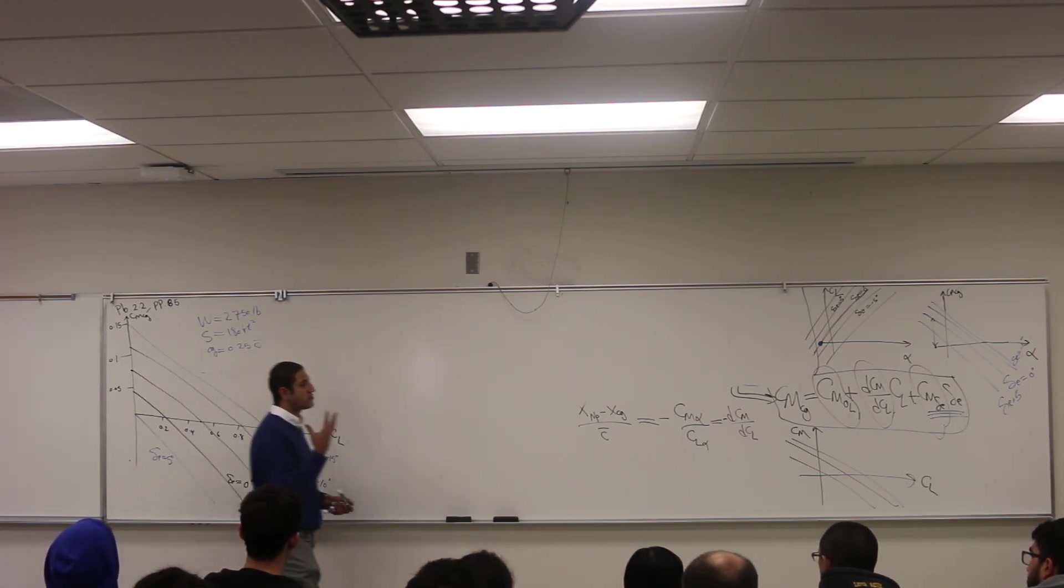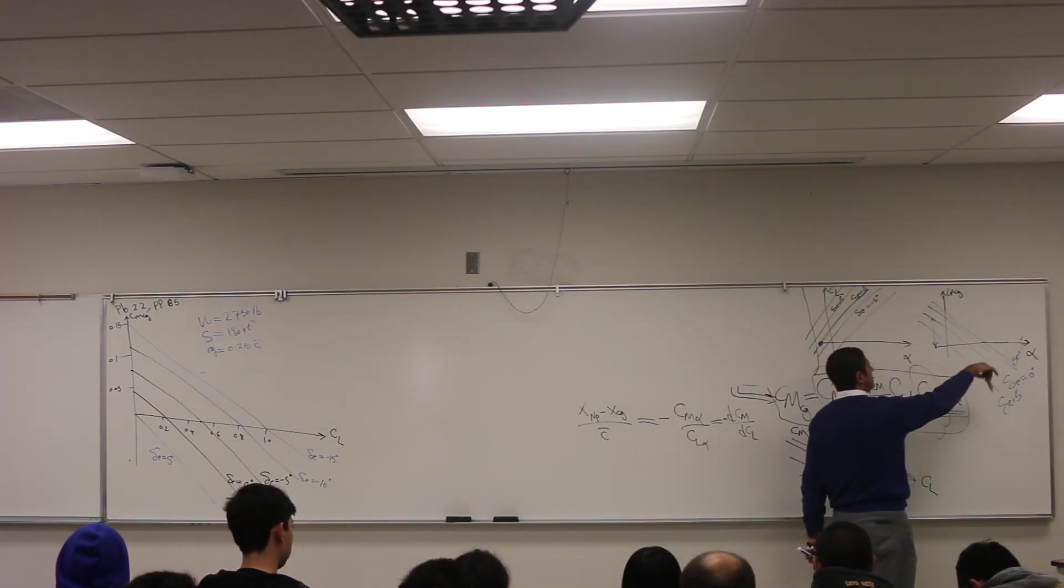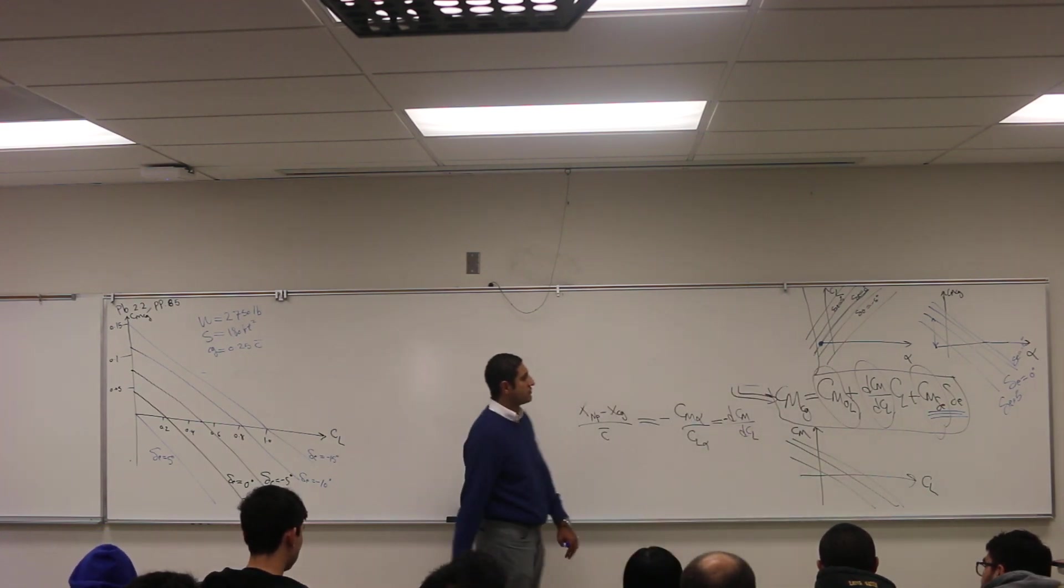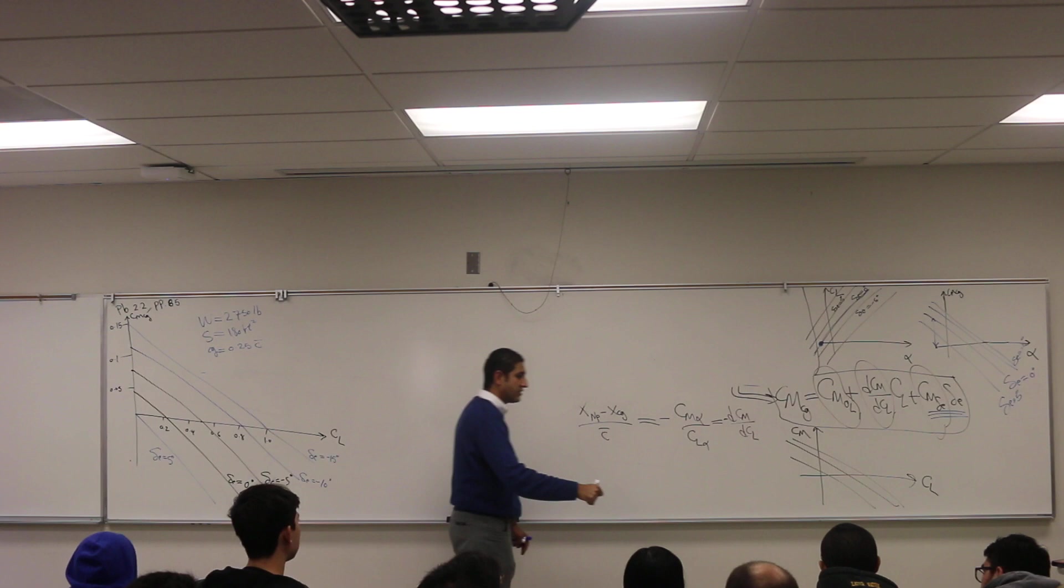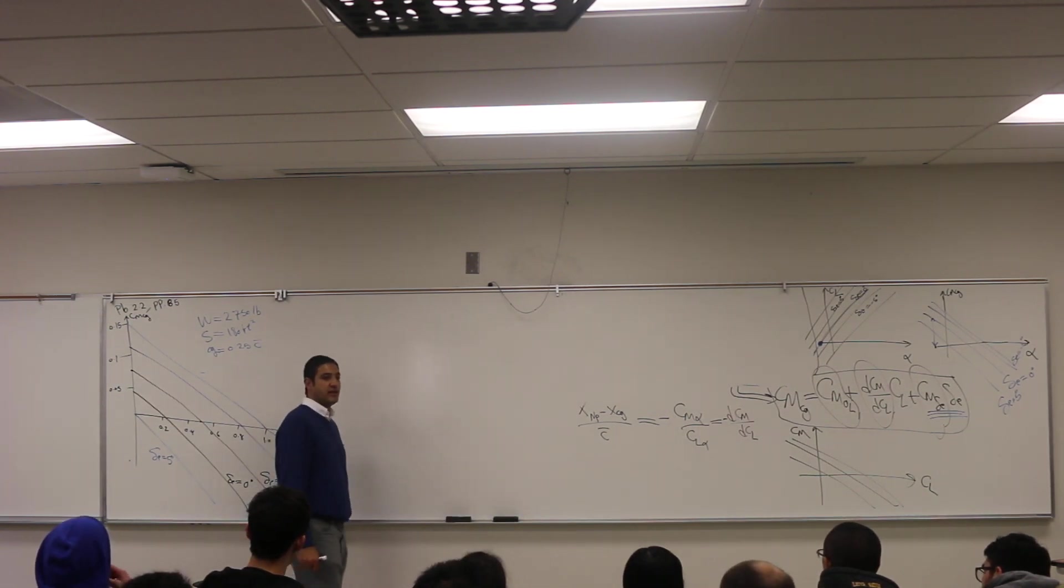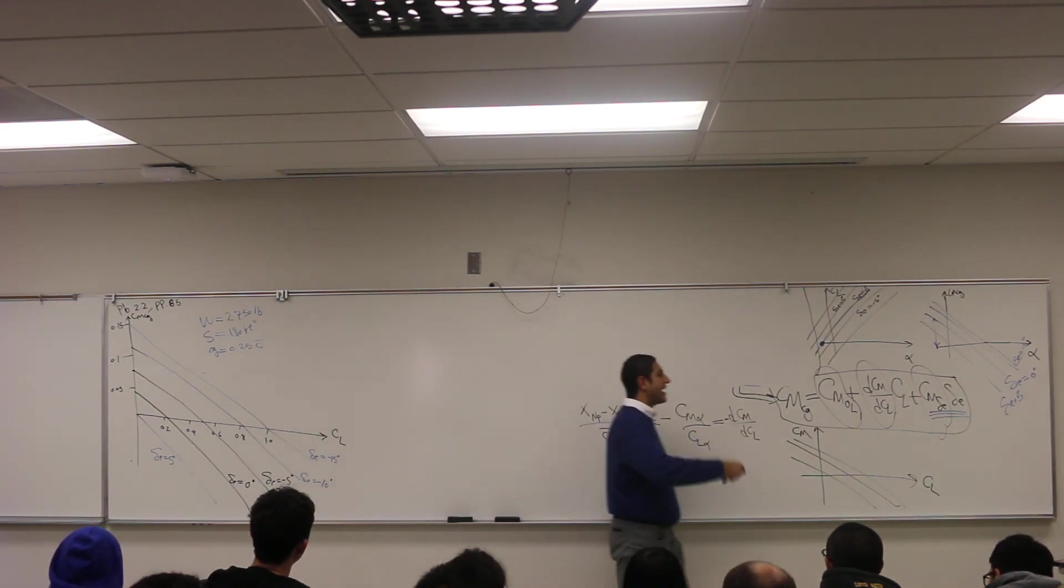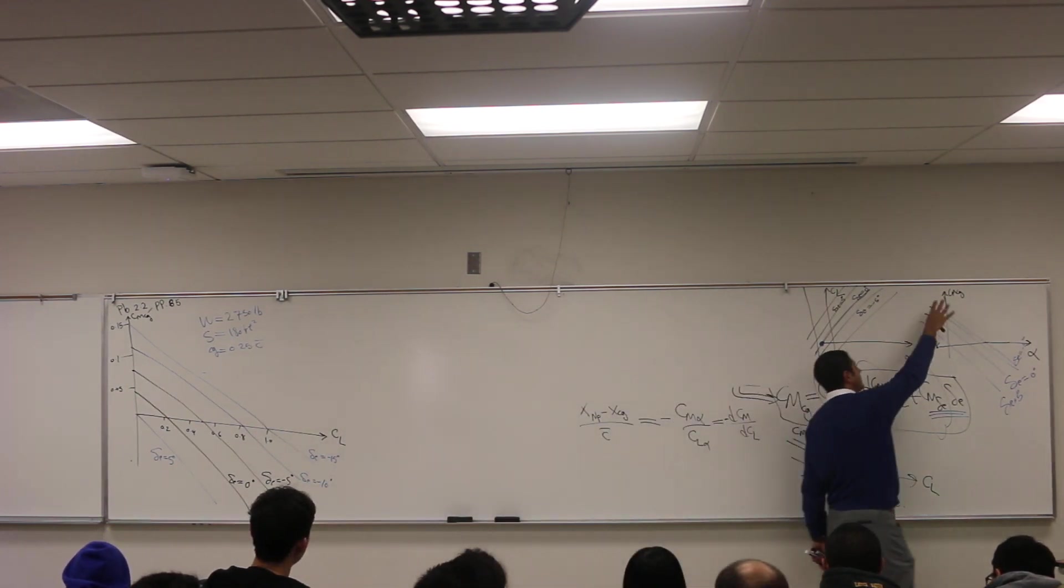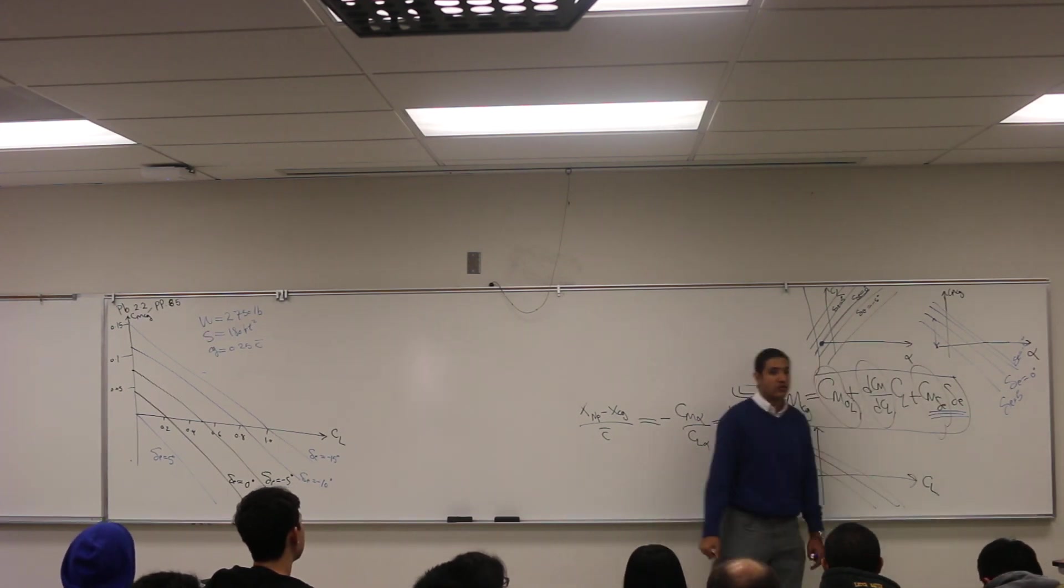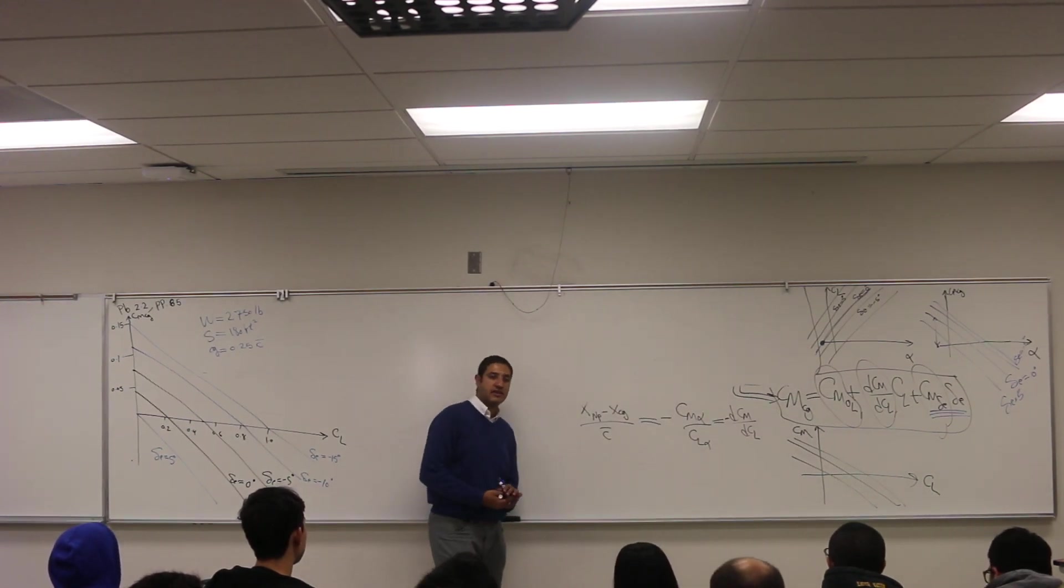Because I need the moment to change with angle of attack. This is the curve that I like to see. It's negative slope. The slope should not be zero. So if my CG is located at the neutral point, because the neutral point, by definition, its moment doesn't change with angle of attack. So if my CG is at this point, the moment at the CG will not change with angle of attack. So you will have zero slope, not negative slope. Meaning that there's neutral stability, not stability.